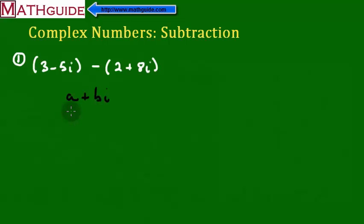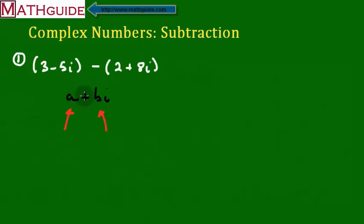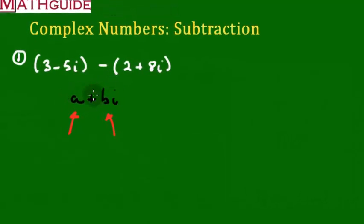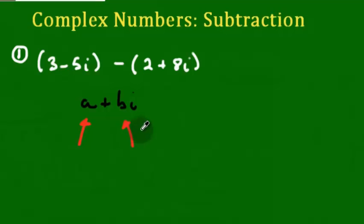What that means is — in case you don't know — A represents the real part. These are the real part of our complex numbers. And then the Bi is the term that indicates or is part of the imaginary part. So A is the real part, Bi is the imaginary part, and the two parts together make a complex number.